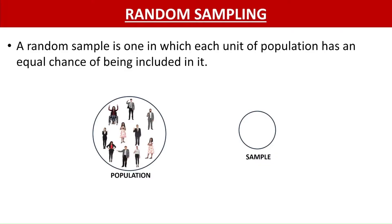A random sample is one in which each unit of the population has an equal chance of being included in it. For example, let us consider a population of 10 persons and we want to have a sample size of 3. We randomly select any 3 persons without any bias and they form part of the sample. This is what is called random sampling.